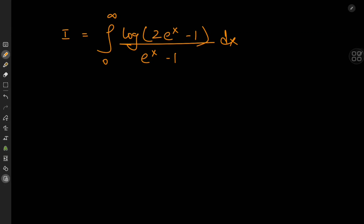Problem two is the integral from zero to infinity of the natural logarithm of two times e to the x minus one divided by e to the x minus one. And this looks like the perfect integral to solve using Feynman's trick of differentiating under the integral sign, but we have to be a bit careful defining the integral function here.